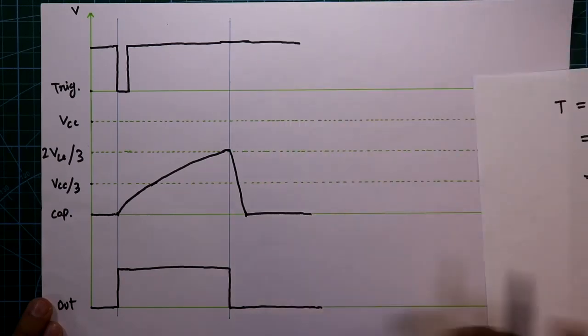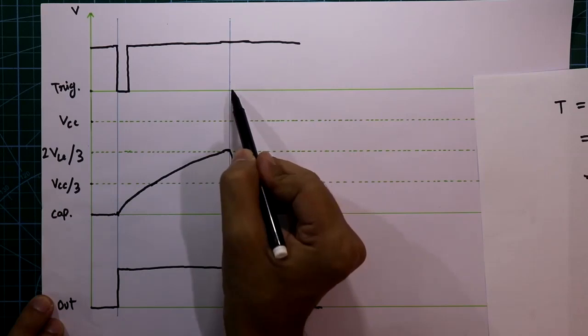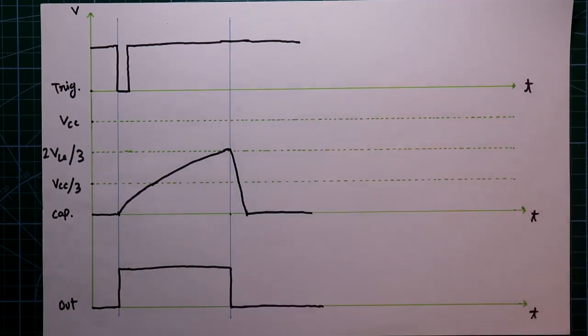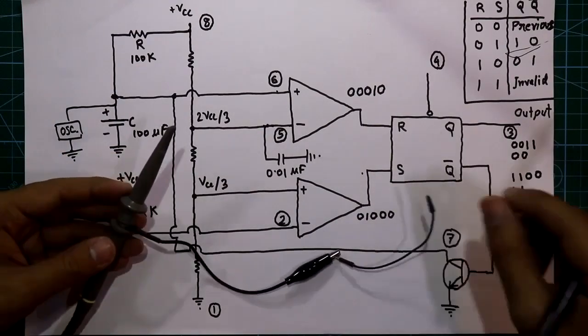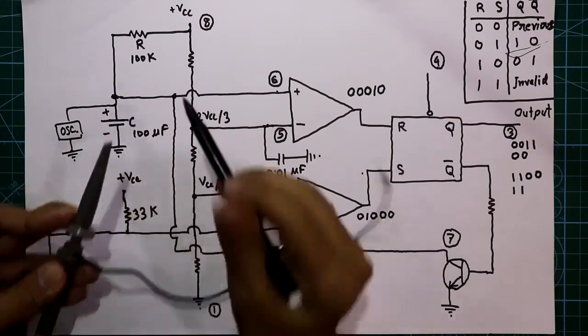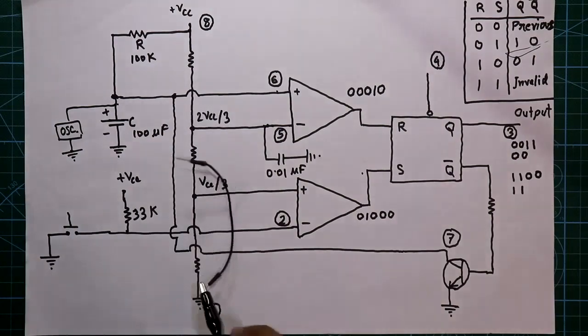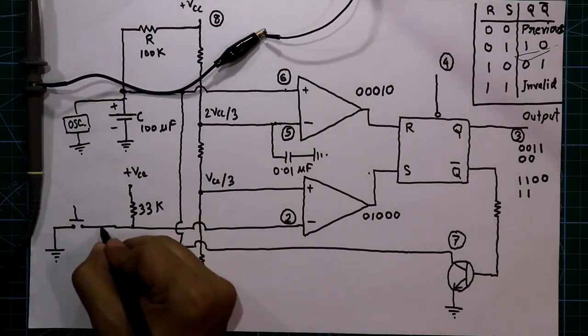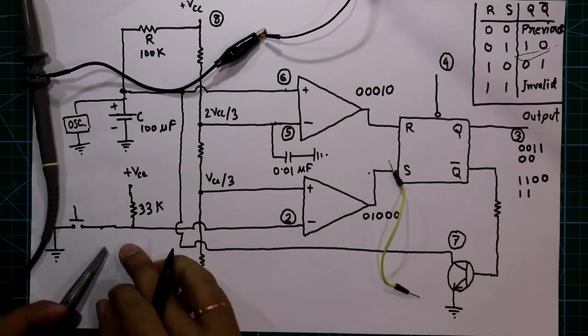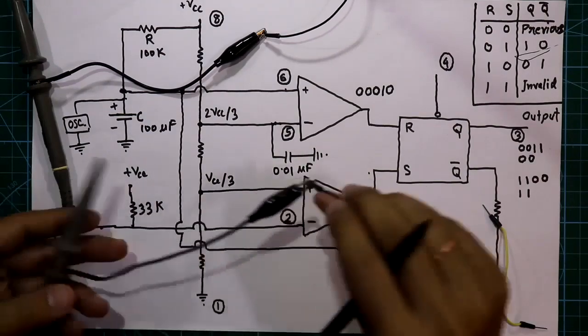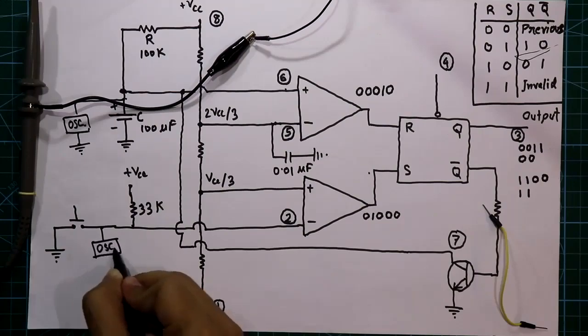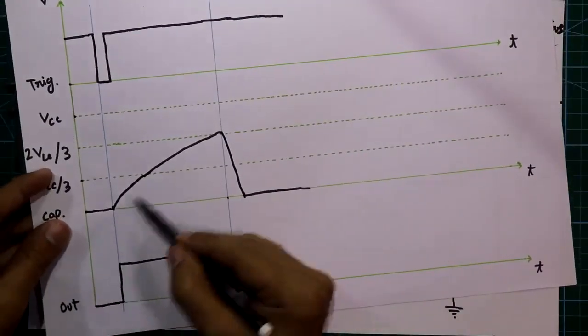Now let us see whether we are getting T = 11 seconds or not. As discussed in the last video, the total time is 11 seconds — that is from the trigger point to the end. I'll connect the oscilloscope probes: one probe across the capacitor and another to observe the trigger signal.